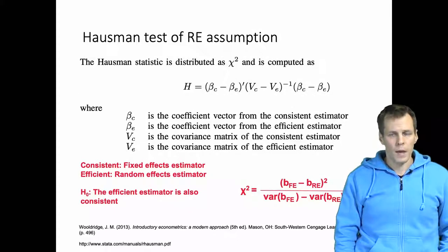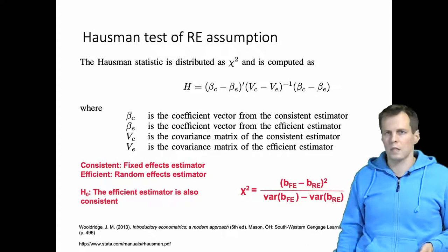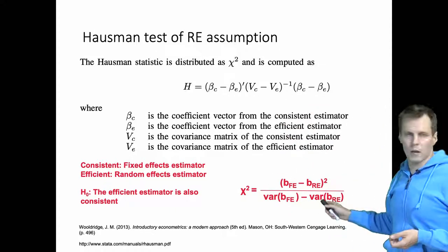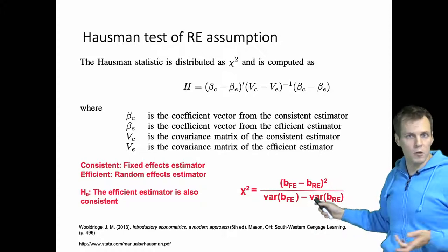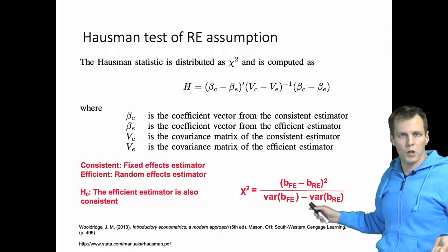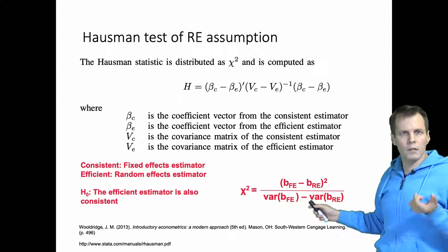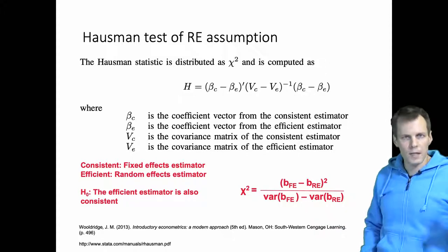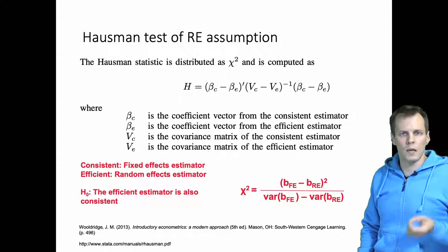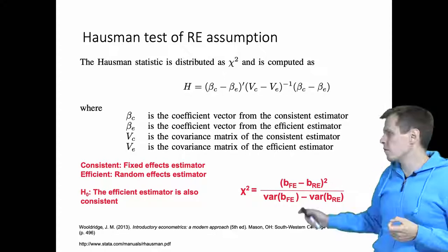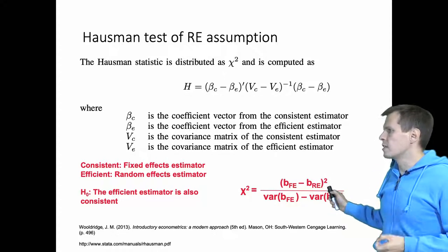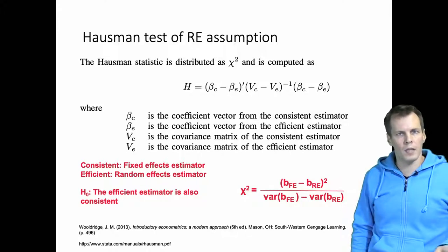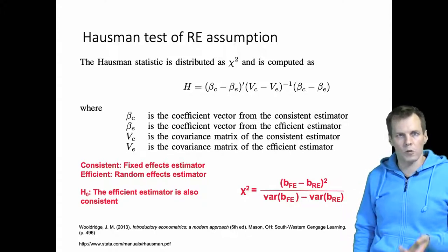The matrix equation for the Hausman test looks complex, but it's more useful to look at the single-parameter case because it's easier to understand. You compare the differences between two estimators: the fixed effects estimator, which is assumed to be consistent, and the random effects estimator, which is assumed to be efficient. The null hypothesis is that the efficient estimator is also consistent.